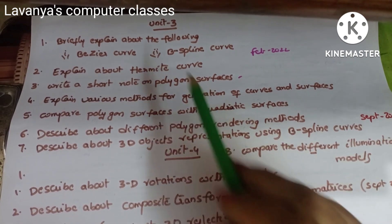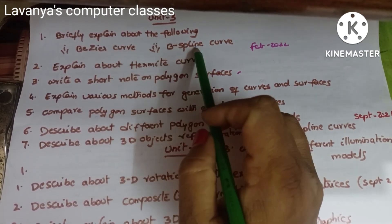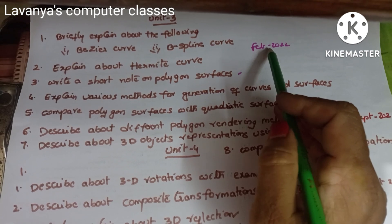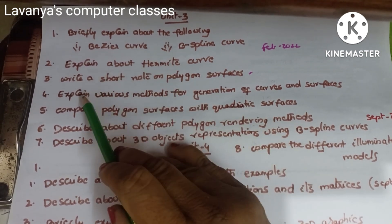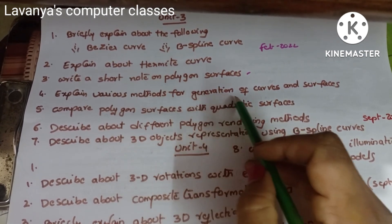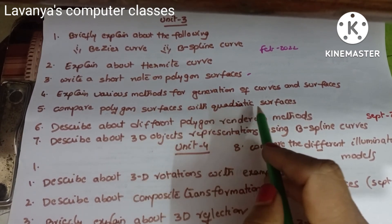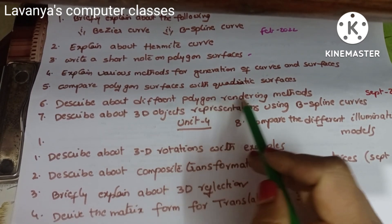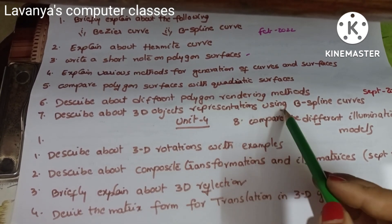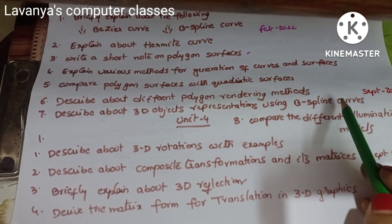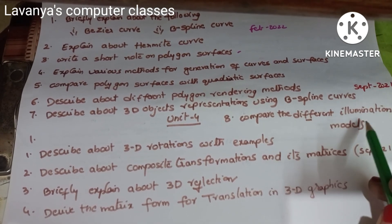Unit 3 important questions: Briefly explain about Bezier curves and B-spline curves — came in February 2022. Explain about Hermit curve. Write short notes on polygon surfaces. Explain various methods for generation of curves and surfaces. Compare polygon surfaces with quadratic surfaces. Describe about different polygon rendering methods. Describe about 3D object representation using B-spline curves. Compare the different illumination models — September 2021.